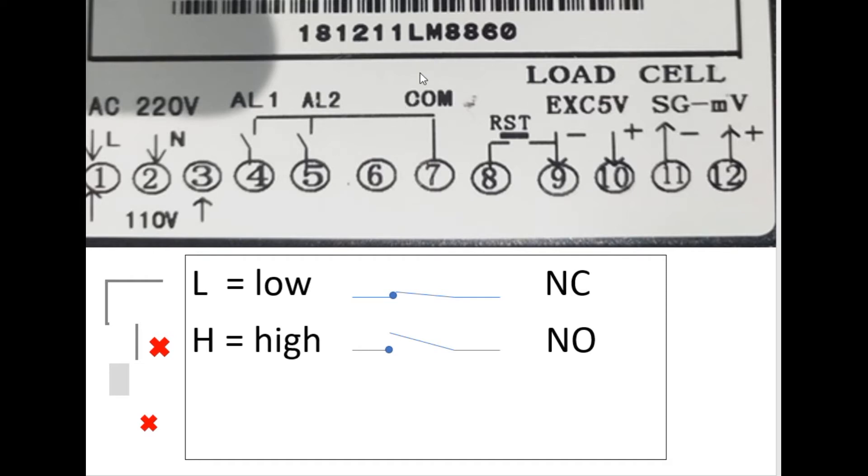Now the problem I'm facing here: number seven is the shared common for relay two and relay one. In my case, the machine will not work in this case, so I have to create another common for alarm one. For that, I have to open the load controller from inside, and let me just show you what I have done.